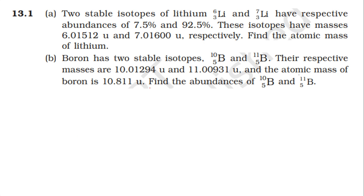Solving the problem: lithium-6 abundance x1 = 7.5%, lithium-7 abundance x2 = 92.5%. The atomic mass of lithium is equal to x1 abundance into mass of lithium-6 plus x2 abundance of lithium-7 into mass of lithium-7, divided by 100.